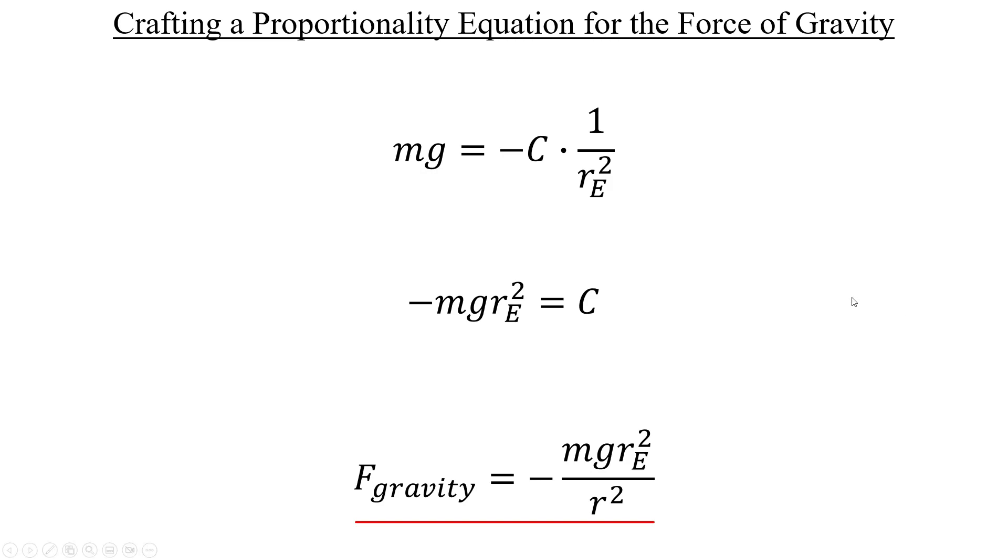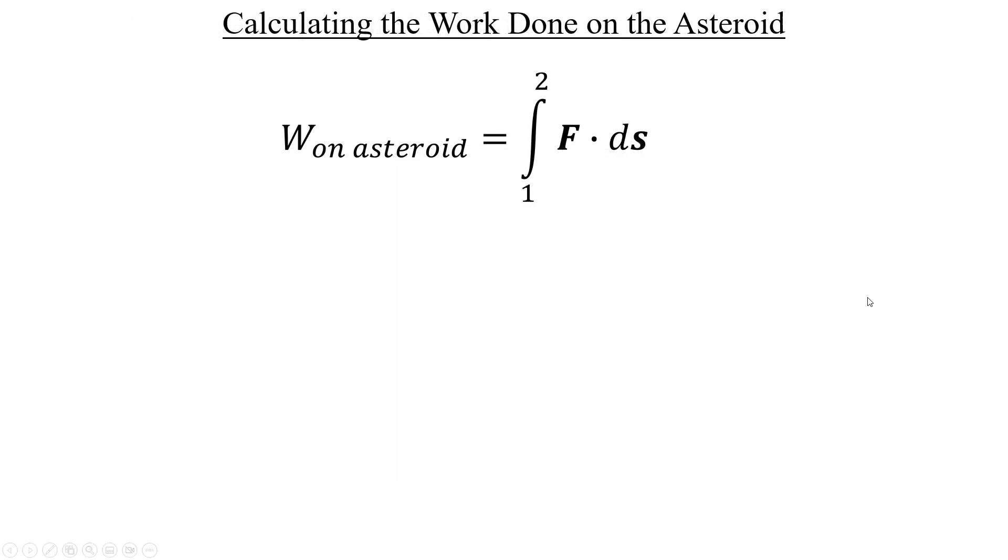First, we'll need to grab the generalized integral definition for the work done on the asteroid by the gravitational force of the Earth. We don't need this full force vector here, since the gravitational force of the Earth only acts along a one-dimensional line towards the asteroid.